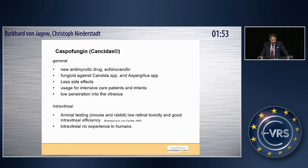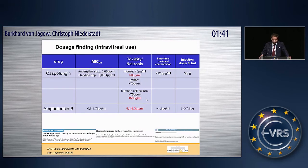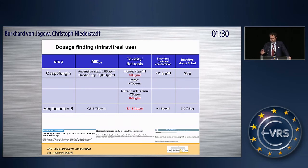At the time of my two cases, there had been no publication about intravitreal use in humans, so I had a problem finding a dose. I took publications from animal testing and chose a dose of 50 micrograms, using a very small eye volume to ensure safety. This resulted in a concentration of approximately 12.5 micrograms per milliliter — far below the toxic dose in animal tests and about 200 times the MIC for Aspergillus and Candida.